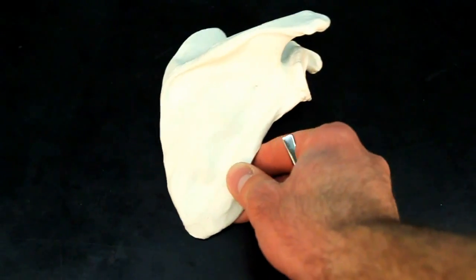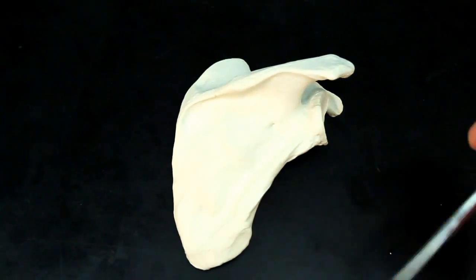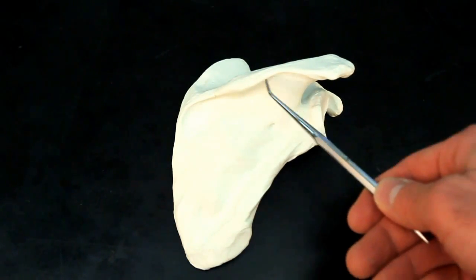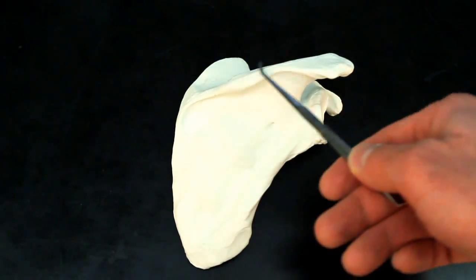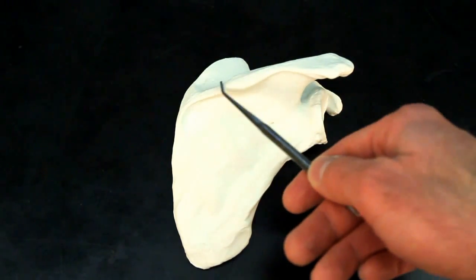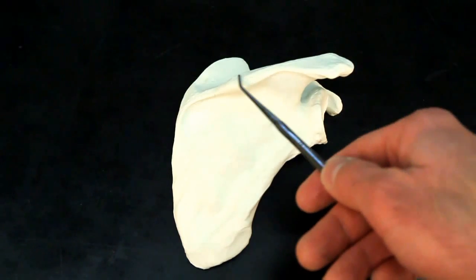But if we turn it over to look at the posterior side, you can see there's this ridge right here. This ridge is known as the spine of the scapula, or the scapular spine.